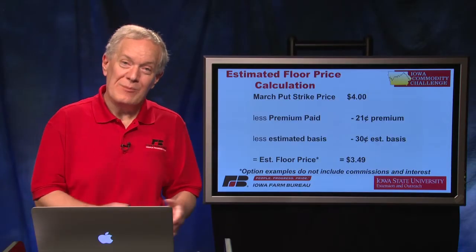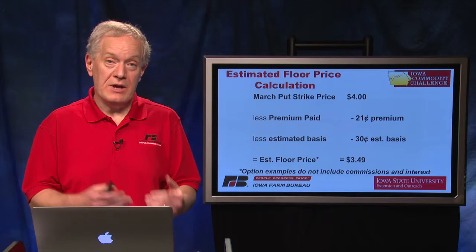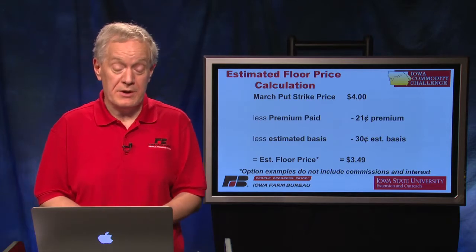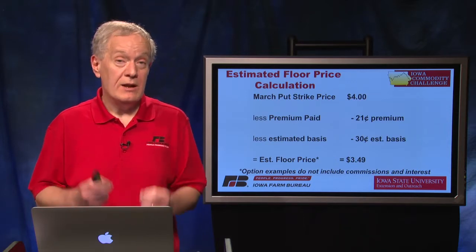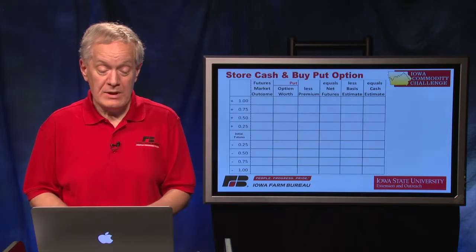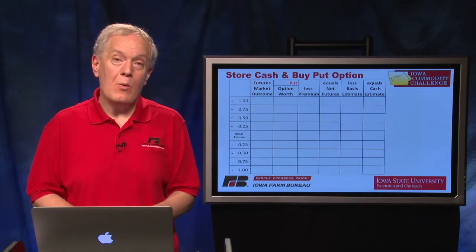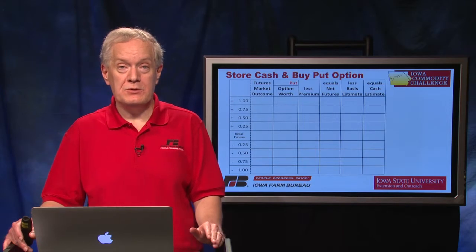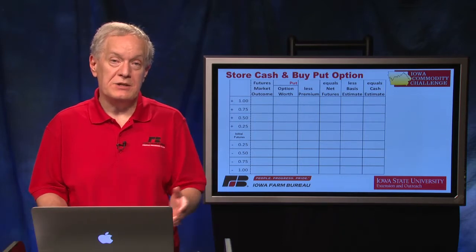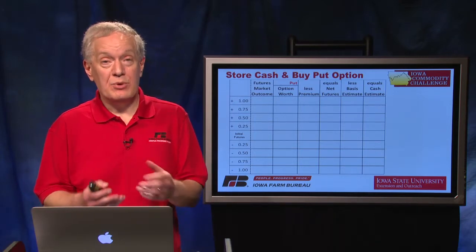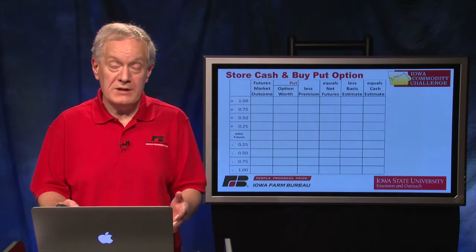Just remember commissions and interest would muddy up the math, but in real life you'd want to consider them as you get down toward the net position. The estimated floor price is simply the put option strike price less the premium less the estimated basis. Let's look at a table that tries to estimate our results over a wide range of futures outcomes, because we don't know what futures will do between November and late February. We need to make sure this whole strategy — the cash position in the bin and the put option to manage downside risk — makes sense over a full range of price outcomes.